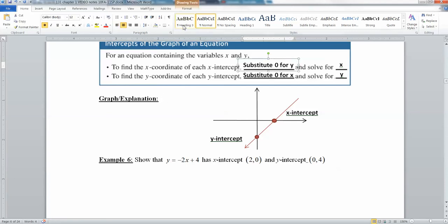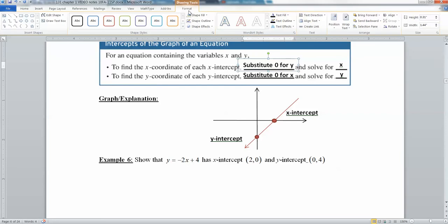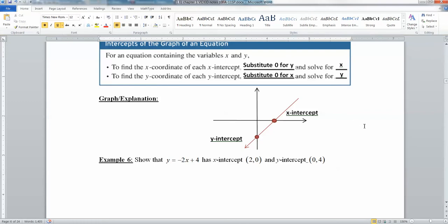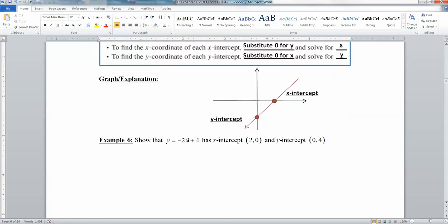And then the same thing's going to happen here for the y-intercept. You're going to substitute zero for x, and you're going to solve for y. So substitute zero for y, solve for x, and then substitute zero for x, and solve for y. That is how you find your intercepts without actually having to bother with the whole y equals mx plus b business.